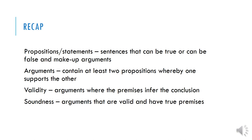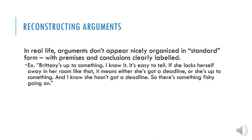Validity refers to the argument's structure — whether the conclusion is inferred by the premises. Soundness refers to whether or not the argument is valid and all of the premises are true. When looking at arguments, however, they don't come in that neat standard form bullet point package. They're written in paragraph form, like the paragraph you see here.